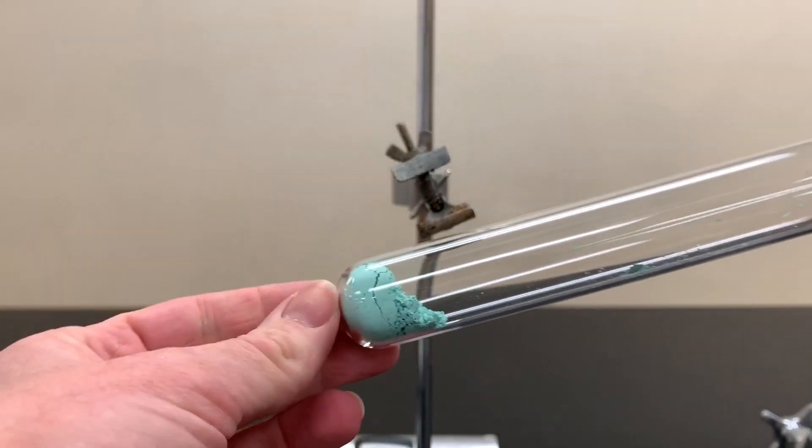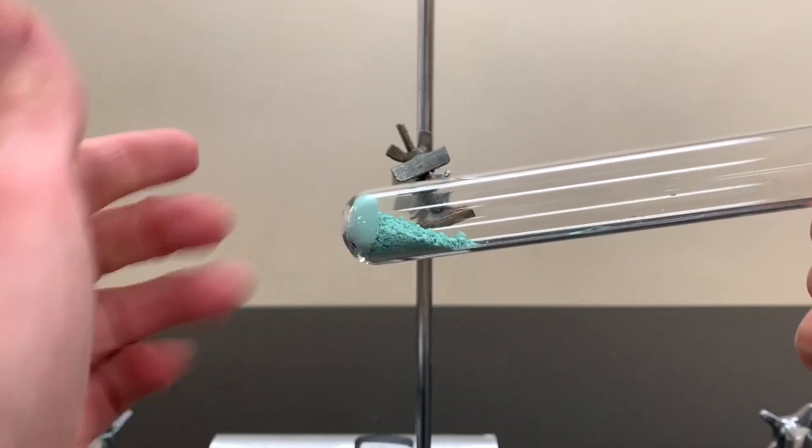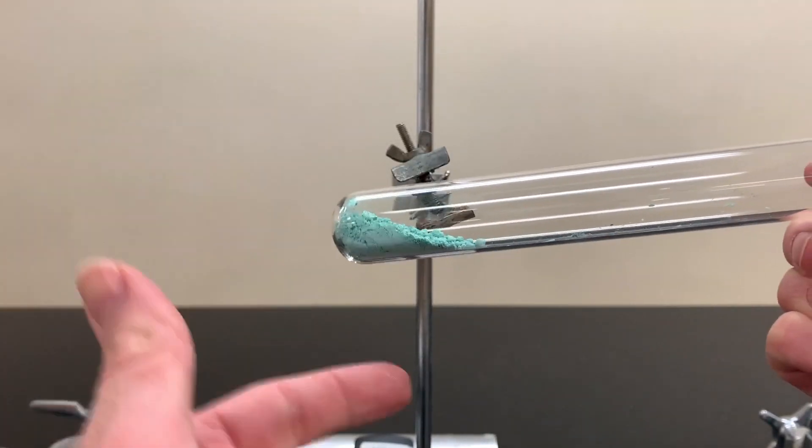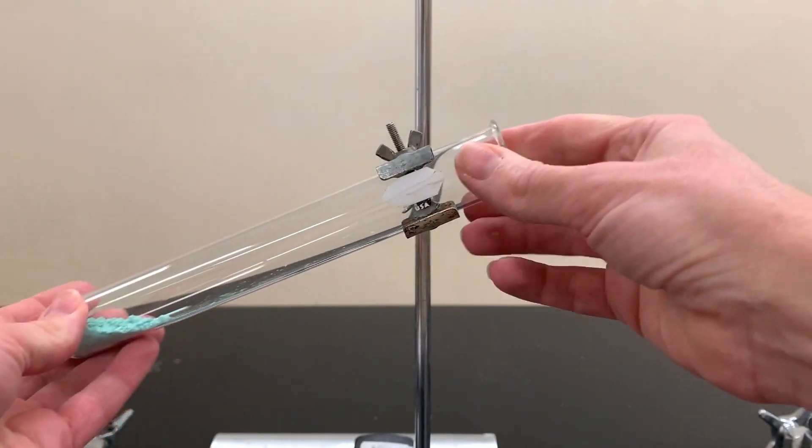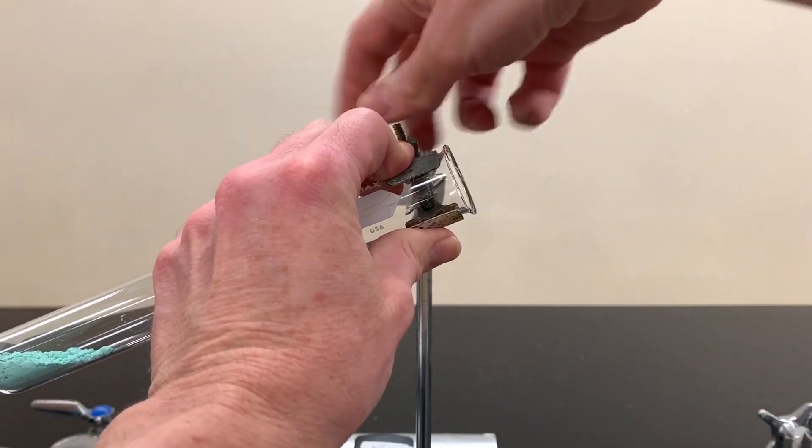The next step is to take your copper two carbonate and shake it down a little bit so it's not all piled in one area. Then put it into your test tube clamp. Try to clamp it closer to the top and tighten it nicely so it's secure.